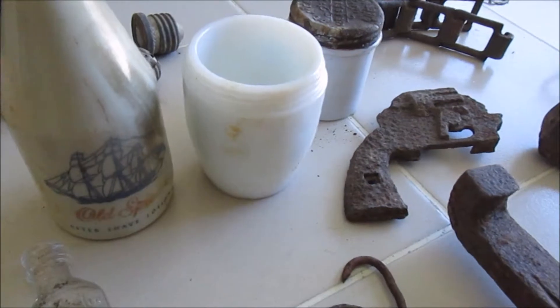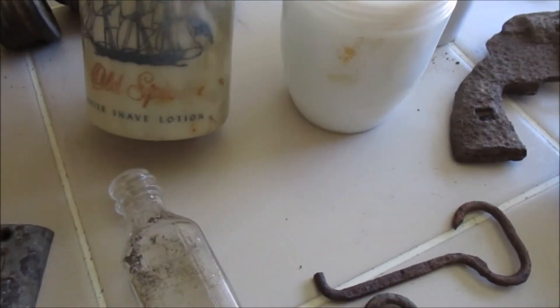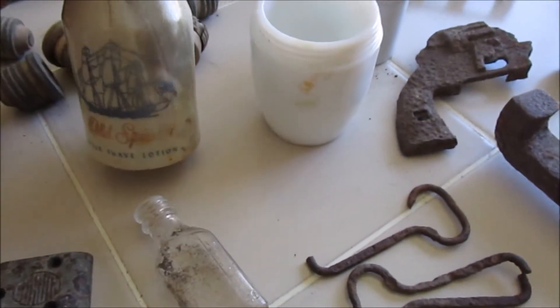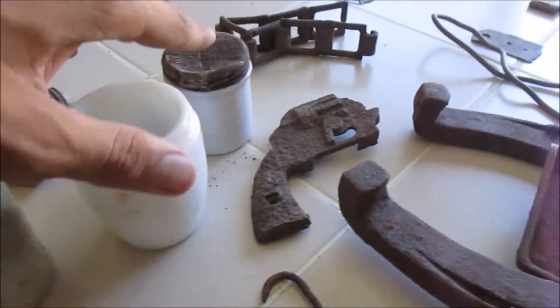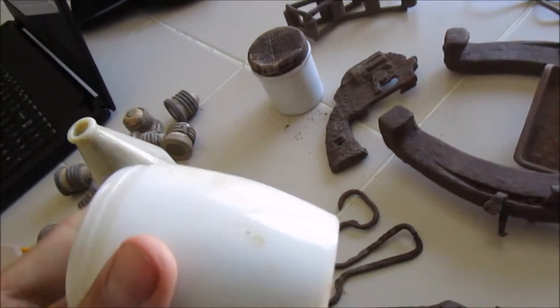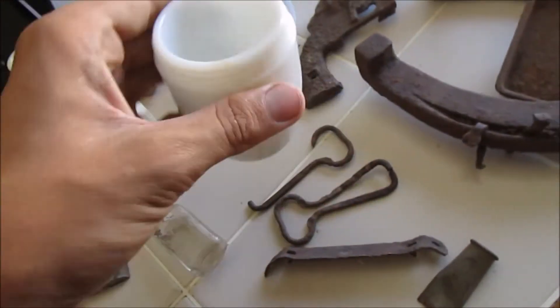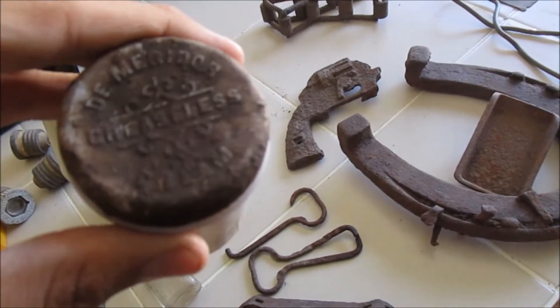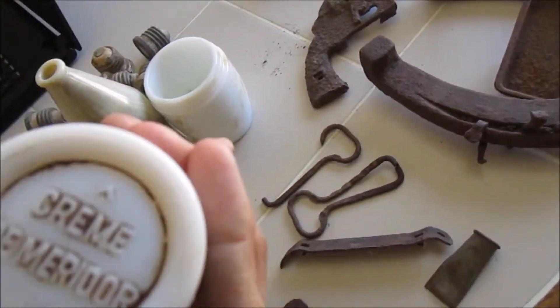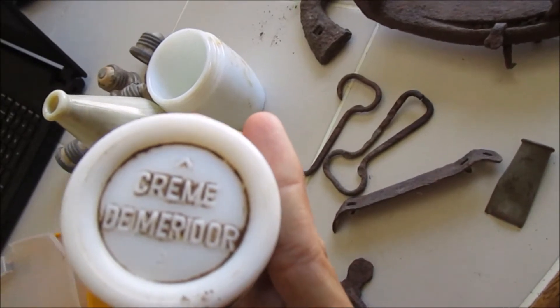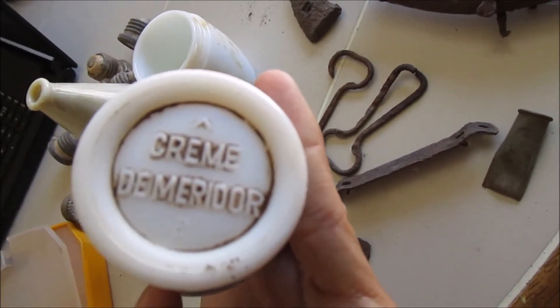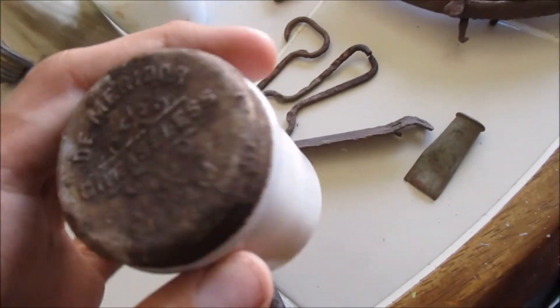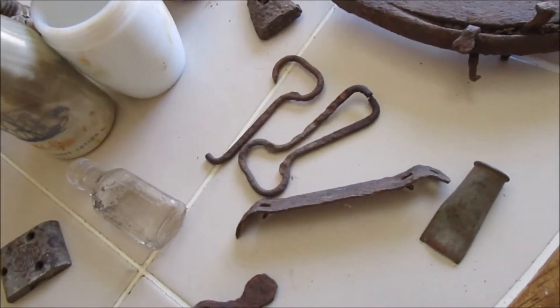Got some bottles. An Old Spice aftershave lotion bottle that's a little bit melted but still displays alright. Odd shaped milk glass jar and one green demeritor, probably French or something, with the original cap still on it. Pretty cool.